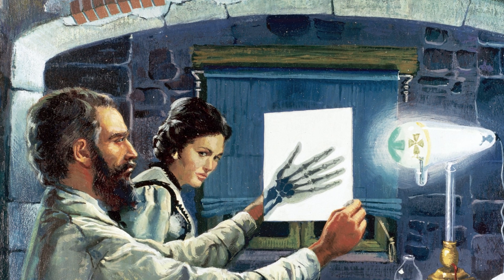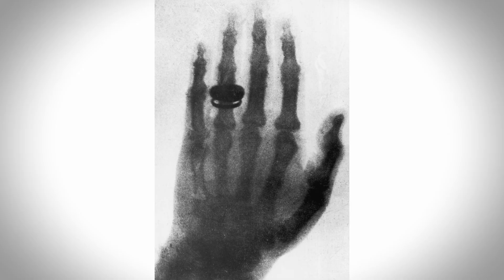And he brings his wife, Anna, in to basically take a photo of the inside of her hand. And so what we get is her bones in her hand, an X-ray with the wedding ring showing as well. And she is so shocked. She says, I have seen my own death.